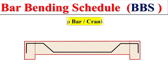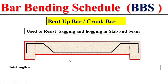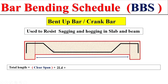The third bar shape in Bar Bending Schedule is the bend-up bar or crane bar, which is provided to resist sagging or hogging in slabs and beams. This bar has a straight portion that is bent at a 45-degree angle. To calculate the total length, we take the total clear span, then add the developmental length on both sides, and also add the two incline portions.